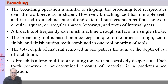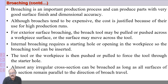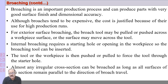The broaching tool is normally made of high speed steel, and sometimes it is coated with titanium nitride. When machining certain stainless steels and steel alloys, cemented carbide may be used for the teeth of the broach tool. Broaching gives a good surface finish and high dimensional accuracy, because the tool is designed in such a way that the skill of the operator is inbuilt in the tool.